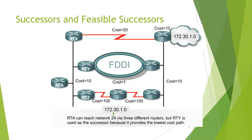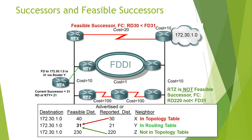In this topology, RTS connects to RTX, RTY, and RTZ with costs of 20, 10, and 100 respectively. The links onward to the destination network have costs of 10, 1, and 100. RTA can reach the network via 3 different routes, but RTY is used as the successor because it provides the lowest path cost — an FD of 31.